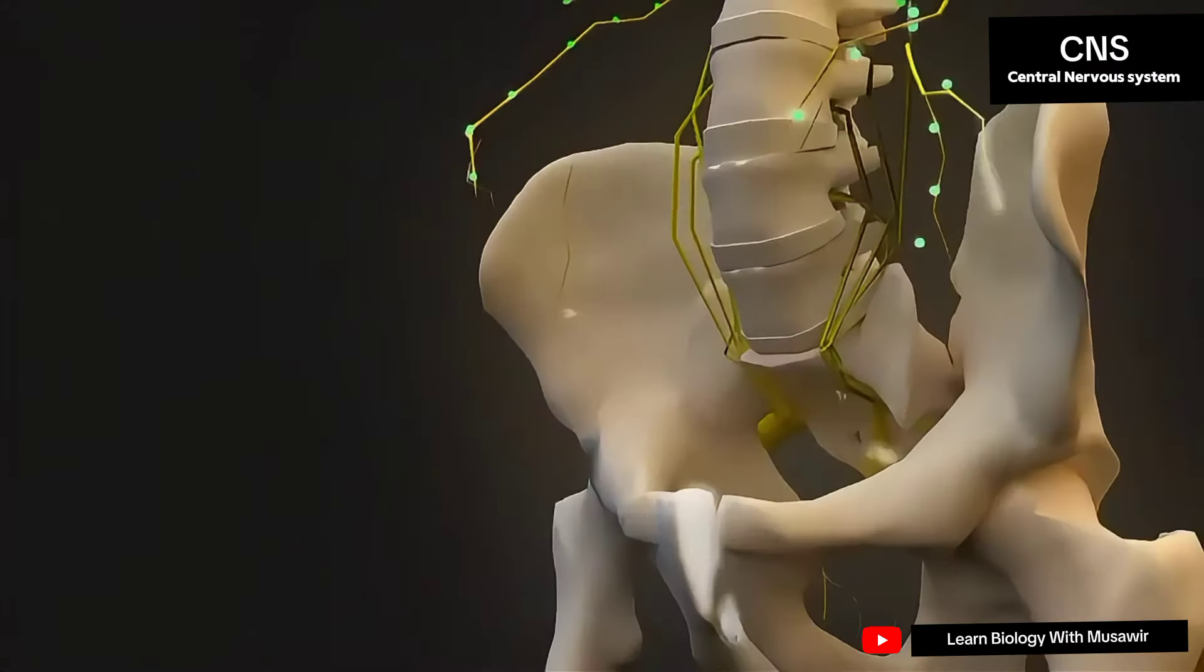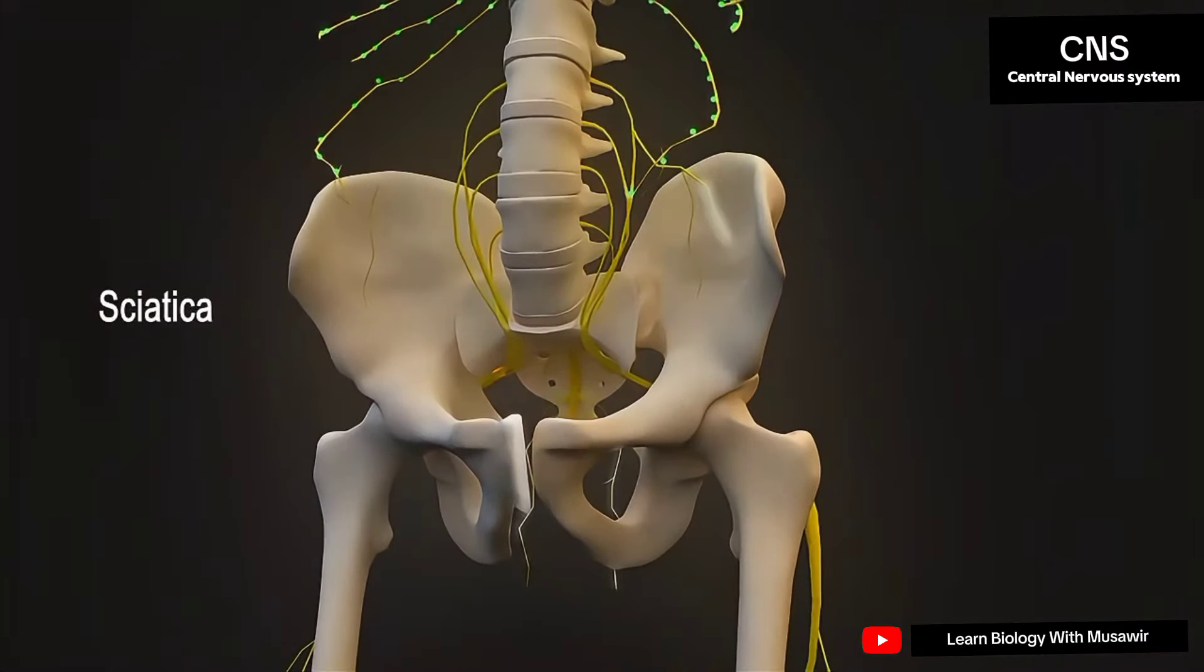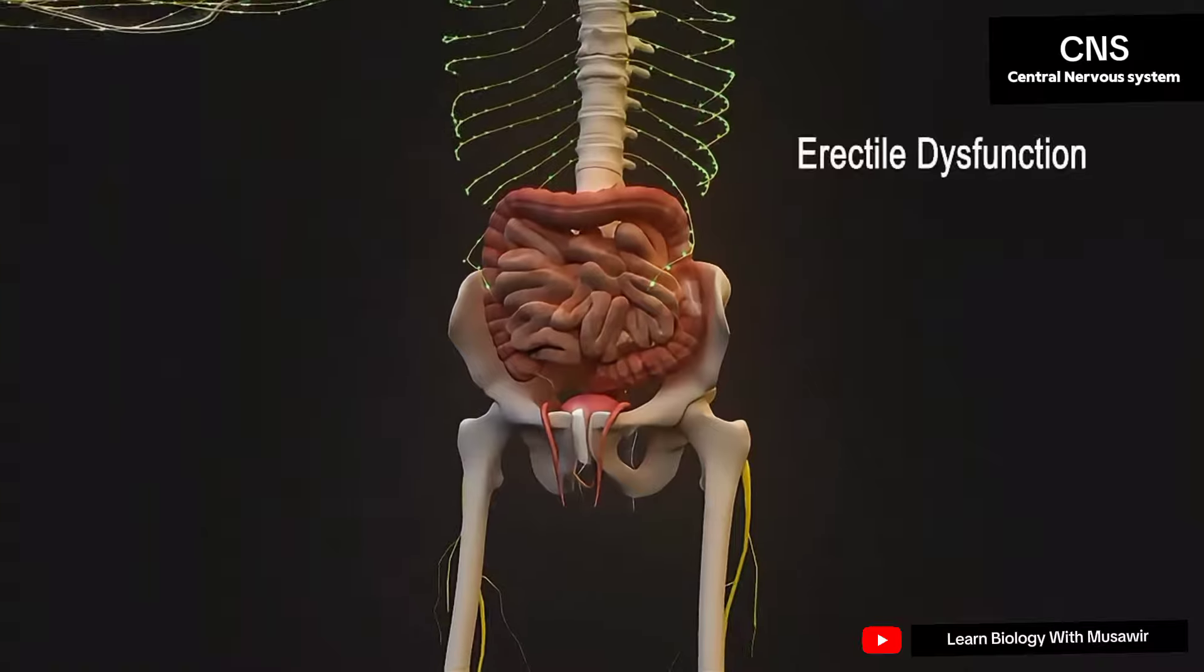So when a subluxation occurs in your lower back, it can cause back pain, sciatica, bladder weakness, irritable bowel syndrome, and erectile dysfunction.